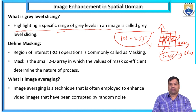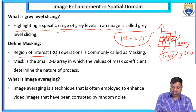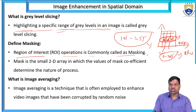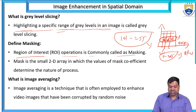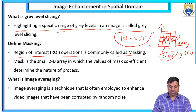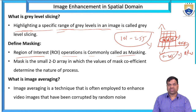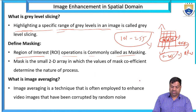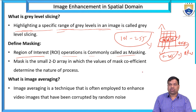Define masking. Region of interest (ROI) operations are commonly called masking. A mask is a 2D array in which the values of the mask coefficients determine the nature of the process.